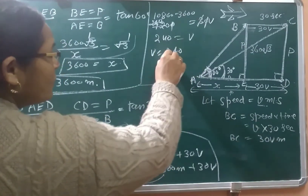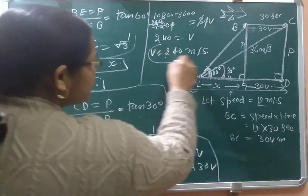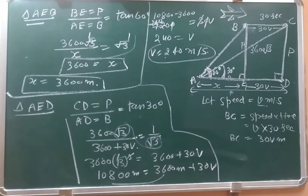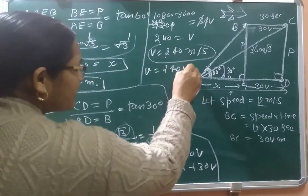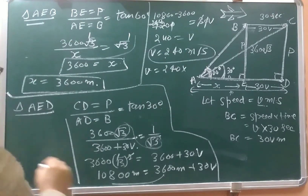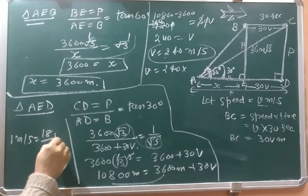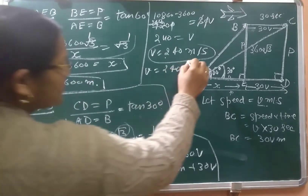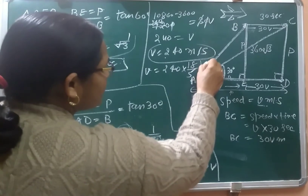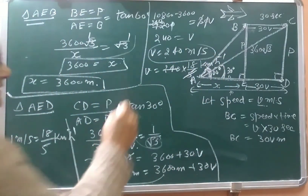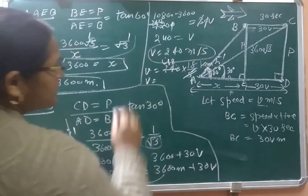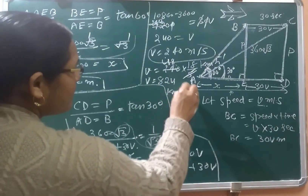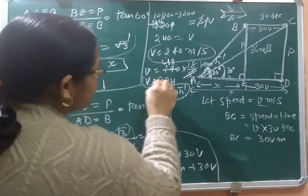The speed of the aeroplane is 240 meters per second. Since the question asks for speed in kilometers per hour, we convert using the unit: 1 meter per second = 18/5 kilometers per hour. So, 240 × 18/5 = 48 × 18 = 864 kilometers per hour. That is the speed of the aeroplane.